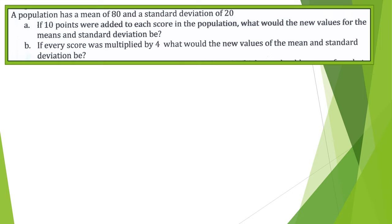If 10 points are added to each score in the population, what would be the new values for the mean and standard deviation? Well, the mean is the average. So if everything goes up 10 points, then the average is gonna go up 10 points. The standard deviation, however, is the measure of the distance from the average. But if everything goes up 10 points, then the distance from the average is staying the same.